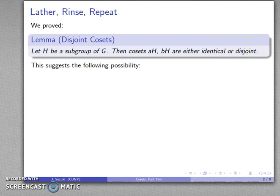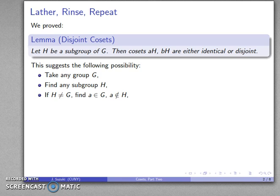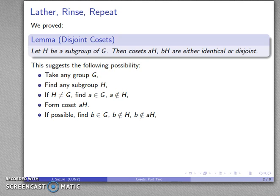This suggests the following possibility. I can take any group G and find a subgroup H. If H is not the entire group, I can find an element that is not in H but is an element of the group, and I can find the coset aH. Now I have two sets: the set that makes up the subgroup and the coset.